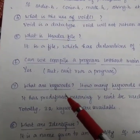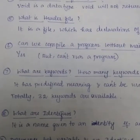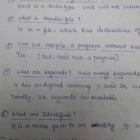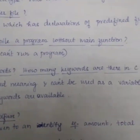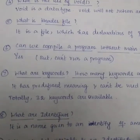Next question, what are keywords? How many keywords are there in C? Keywords has predefined meaning and can't be used as a variable. It cannot be used as a variable name. In C, there are 32 keywords.